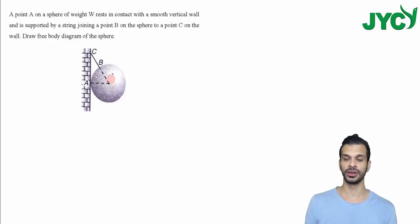Hi, so let's solve an example on FBD, that is free body diagram. We have a sphere which is hanging by a string, and then the sphere has contact with the wall at this point.